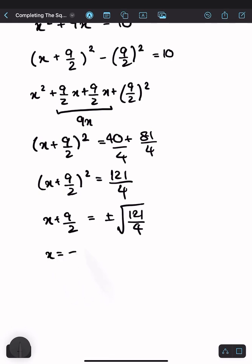That's x equals minus 9 over 2 plus minus. And we can simplify this third because both 121 and 4 are squared numbers. Square root of 121 is 11. Square root of 4 is 2. So now, either x is minus 9 over 2 plus 11 over 2. So that's equal to 2 over 2, or just 1.